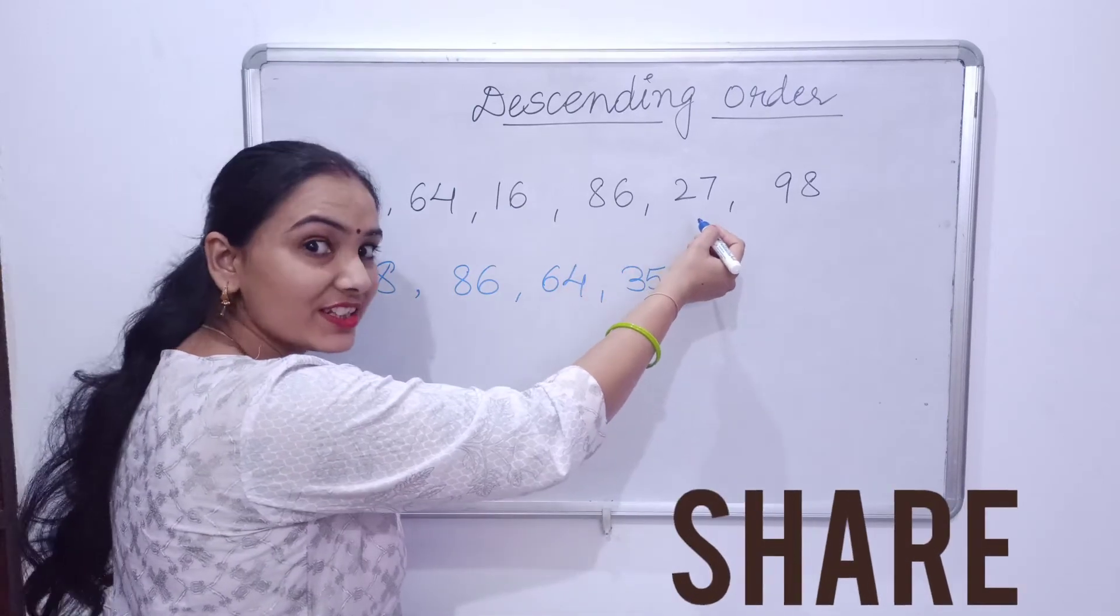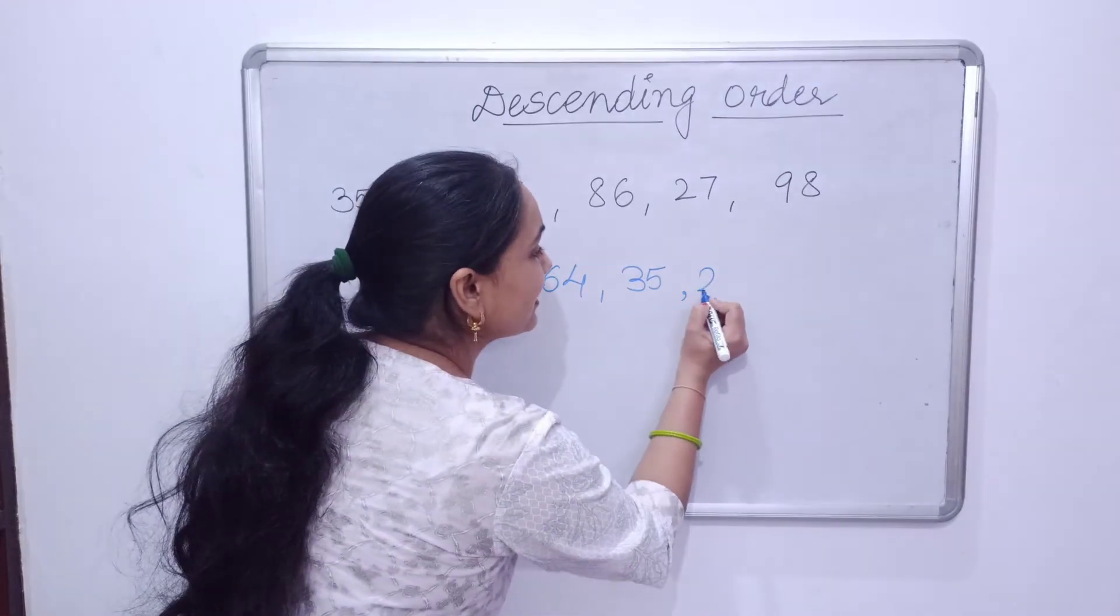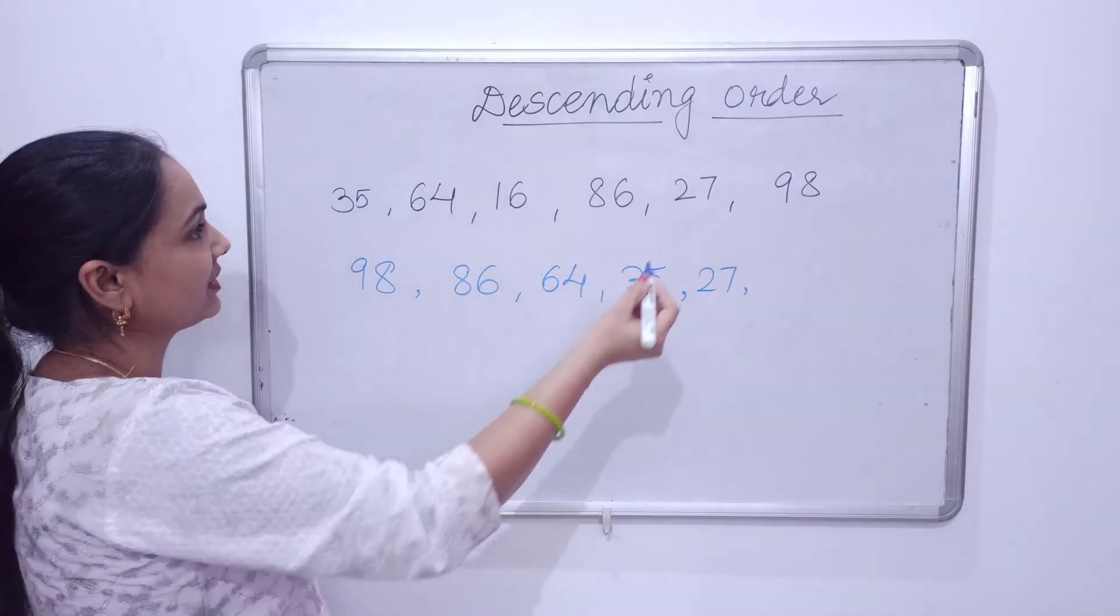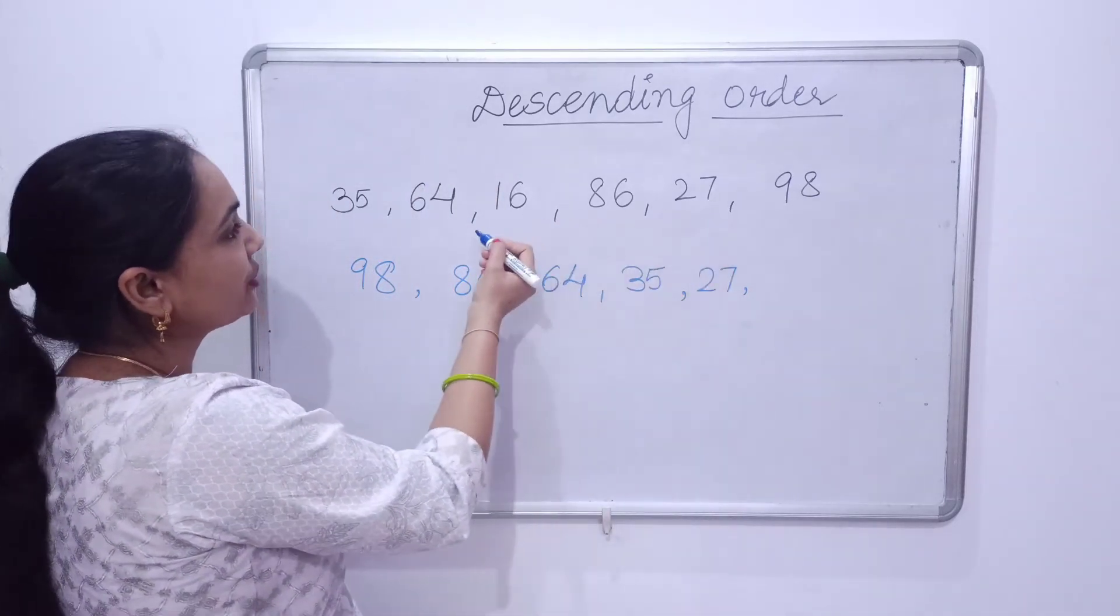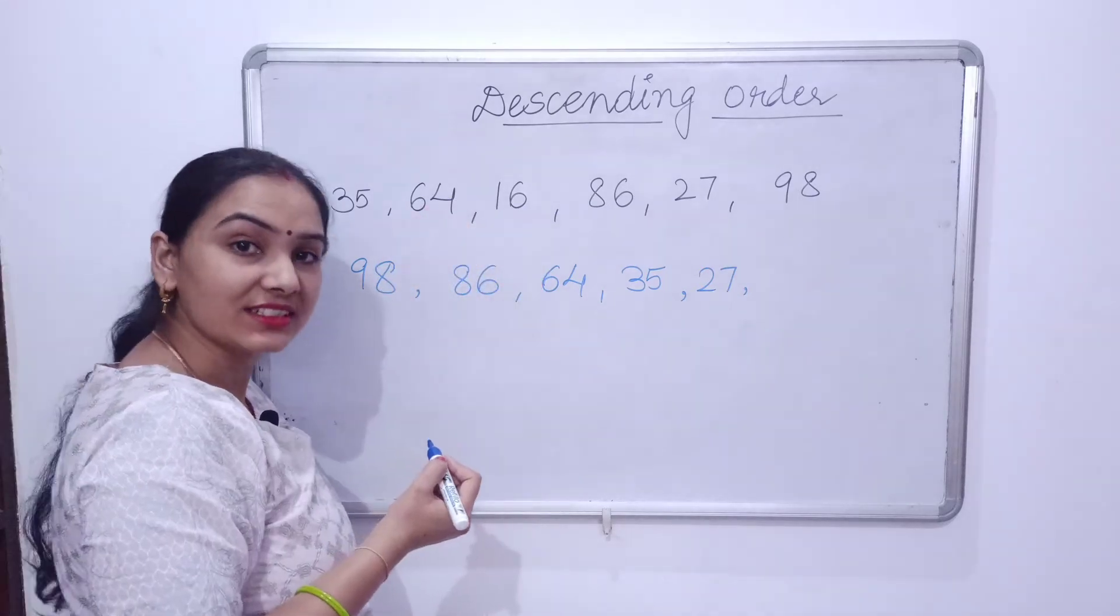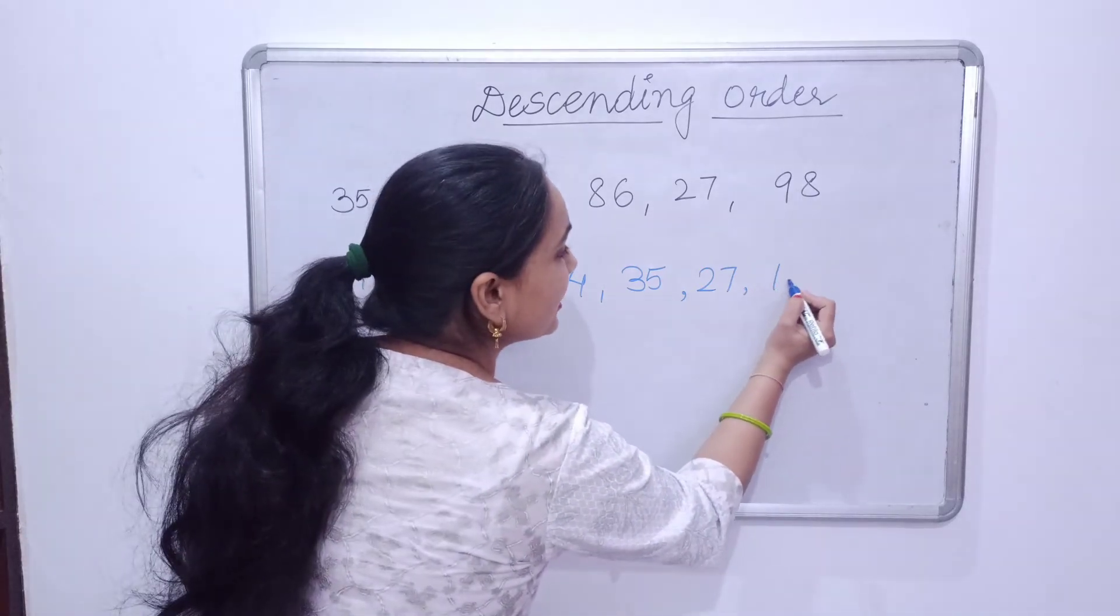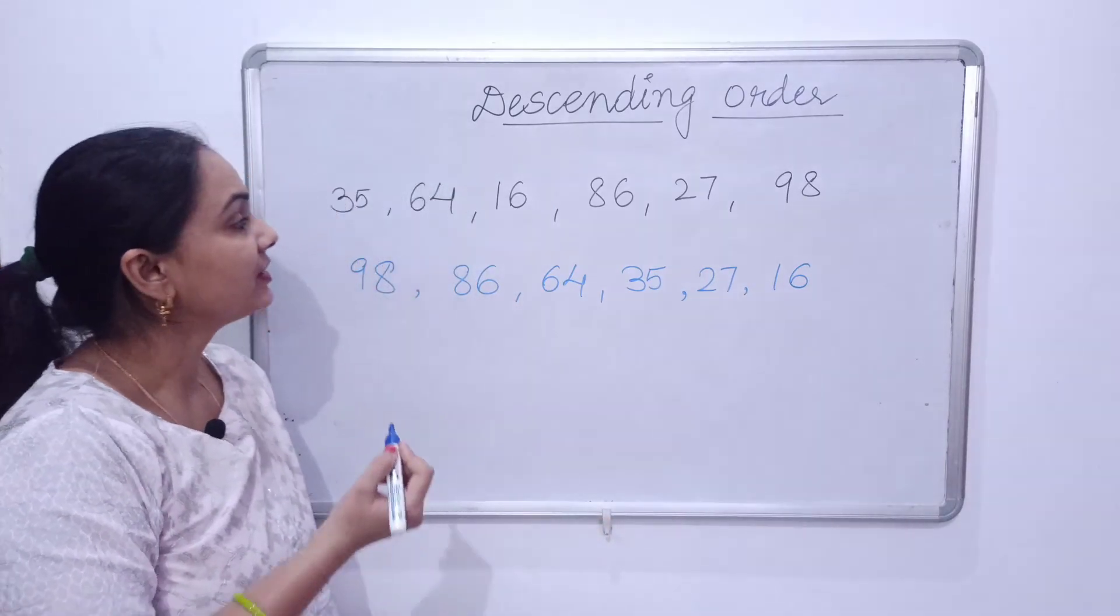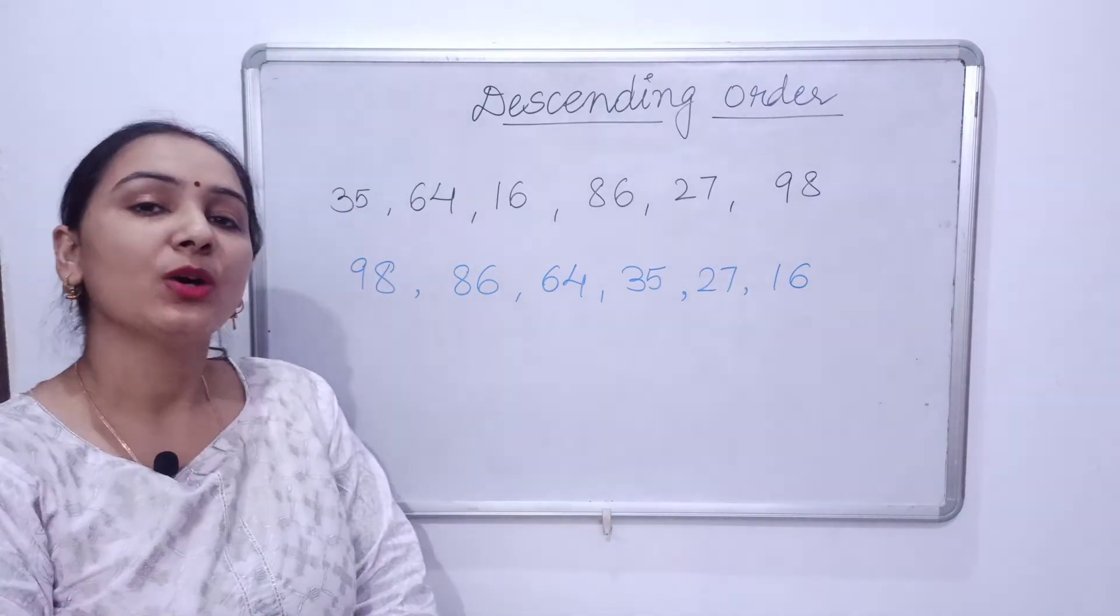Right, so we'll write 27. Then after 27, which is the last? Last is 16. So 16. Here is the smallest number. This was all about descending.